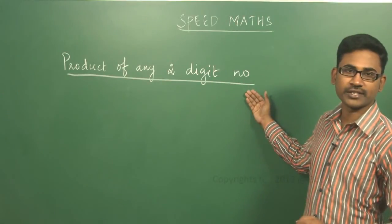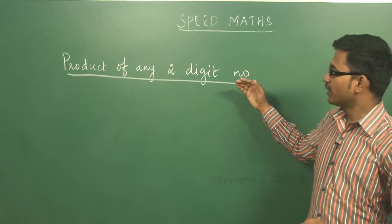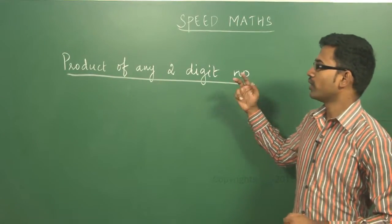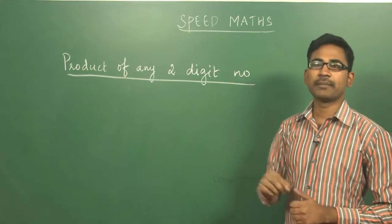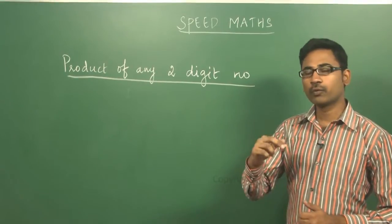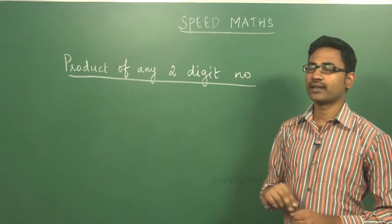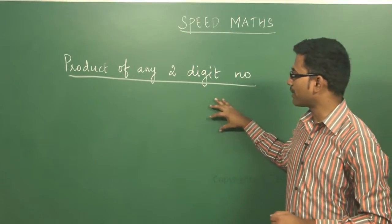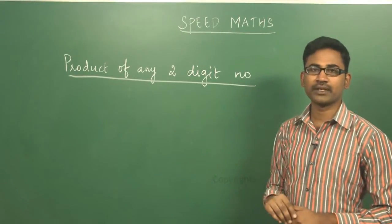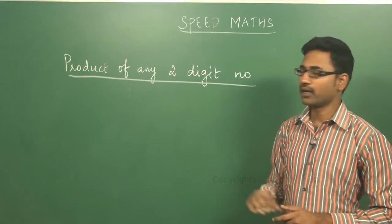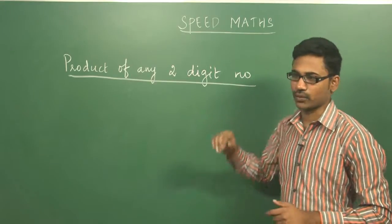This is about the product of any two-digit number. If a two-digit number is there and you want to multiply it, you have to apply the shortcut method that we are going to teach now.